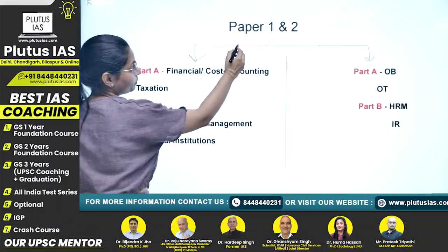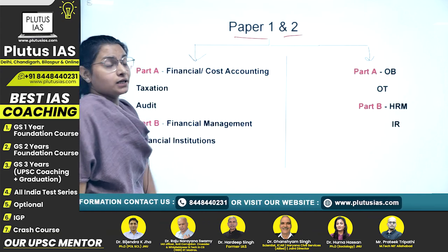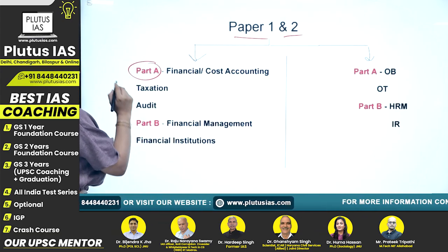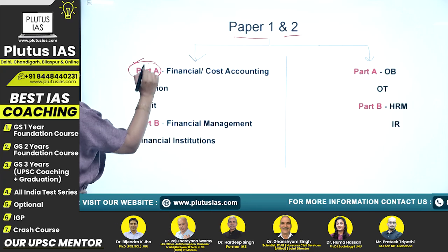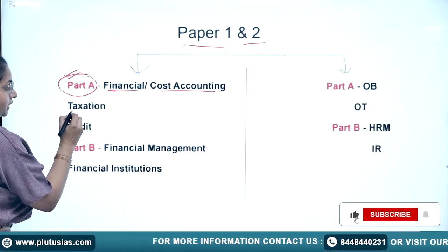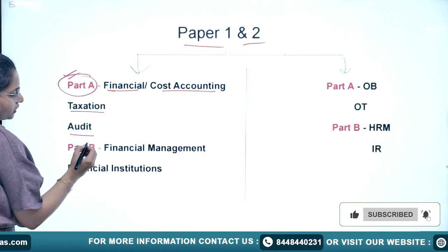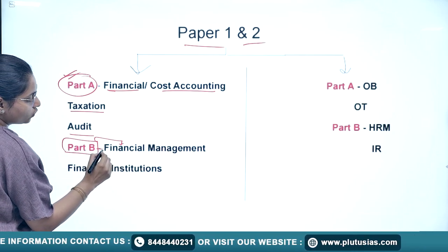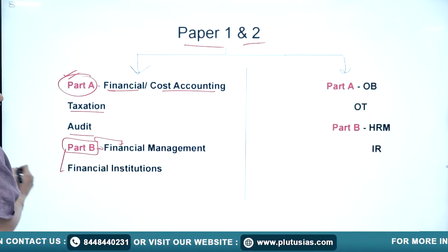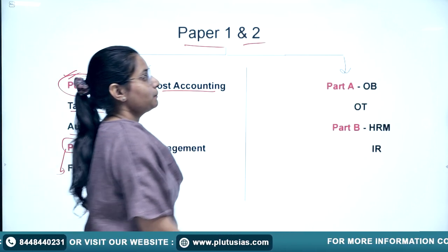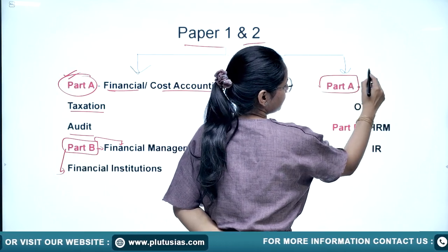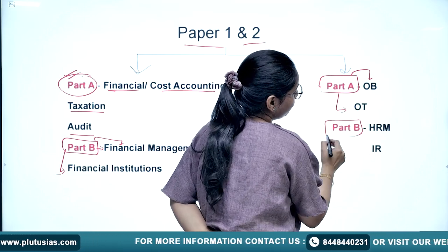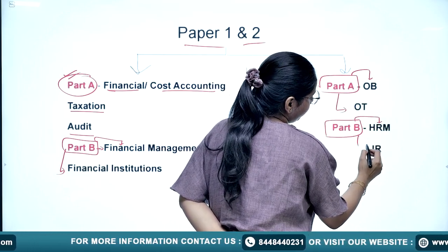There are two papers: Paper 1 and Paper 2. Paper 1 is divided into Part A, which covers financial accounting and cost accounting, and the topic of taxation and audit. Part B includes financial management and financial institutions. In Paper 2, Part A asks about organizational behavior and organizational theory, and Part B covers HRM and IR.